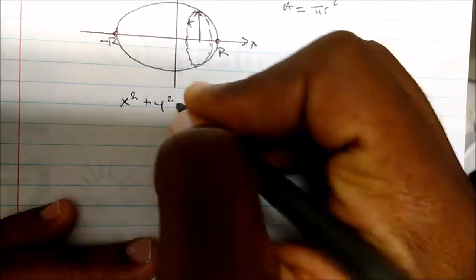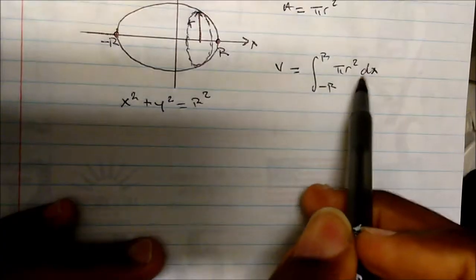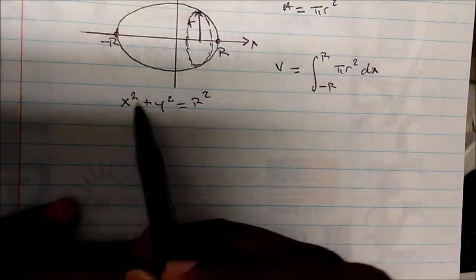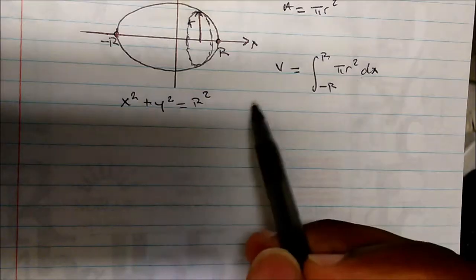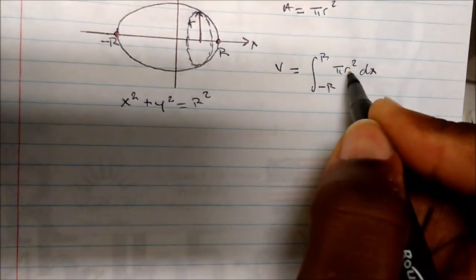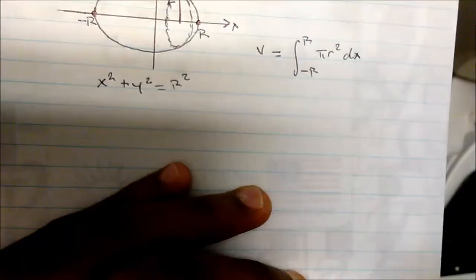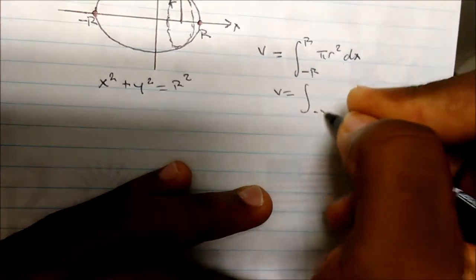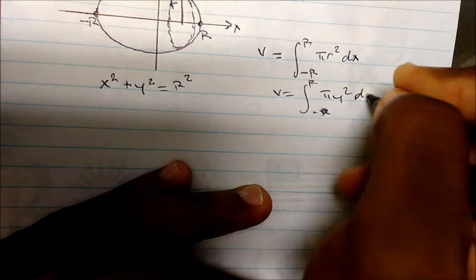We know the equation of a circle is x squared plus y squared equals r squared. If I need to integrate with respect to x, I have to get y equal to some number, because y is actually what I'm plugging in for r. So the volume from negative r to r is π y squared dx.